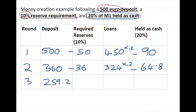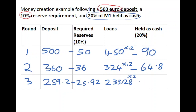€259.20 is recycled back into the banking system, of which 10% is held as a reserve requirement — that's €25.92. The difference between these two figures can be loaned out, giving €233.28. We know that 20% of that must be held as cash, so multiplied by 0.2, that means €46.66 is held as cash outside the system.